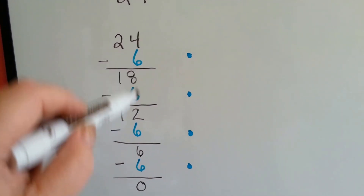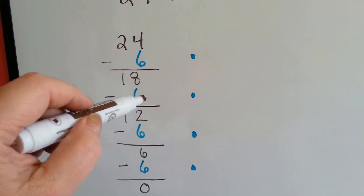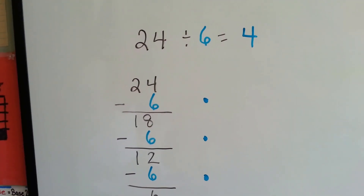We count how many 6's we took away: 1, 2, 3, 4 — and that's our answer.